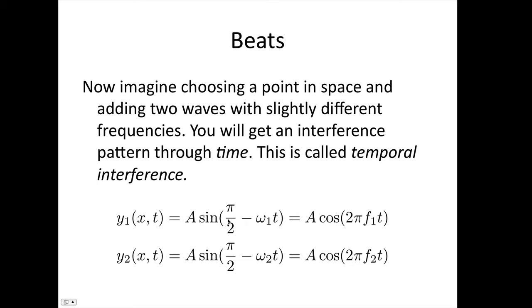For our traveling wave, we've chosen a point in space, so we've replaced kx + φ with π/2. That can be anything because we can choose φ randomly. This is wave 1, this is wave 2. The only difference is slightly different omegas, which is slightly different frequencies. A sin(π/2 - ω₁t) can be written as A cos(2πf₁t), and we have A cos(2πf₂t).